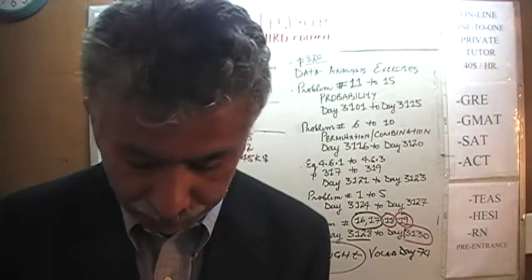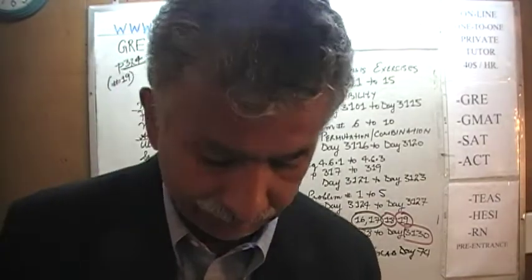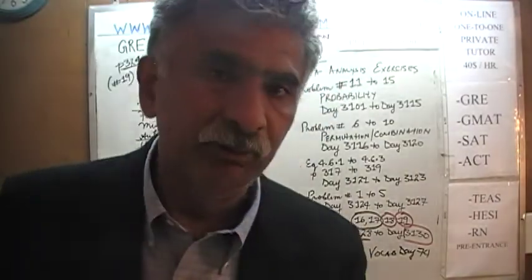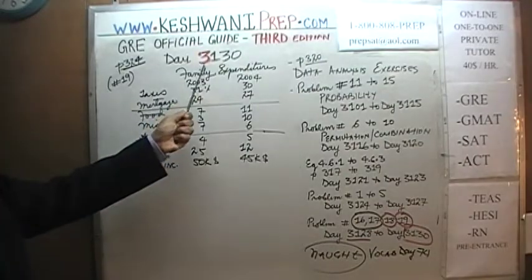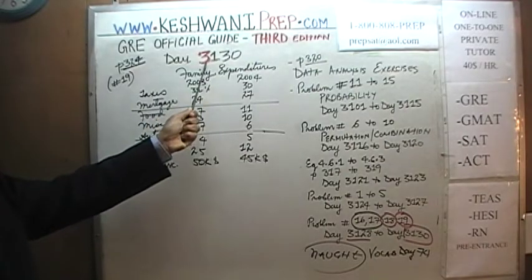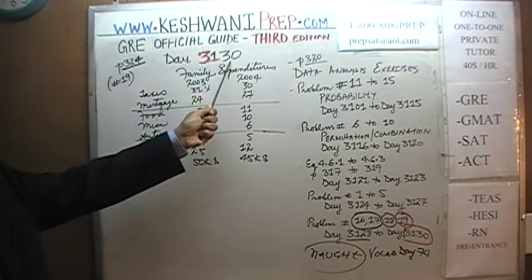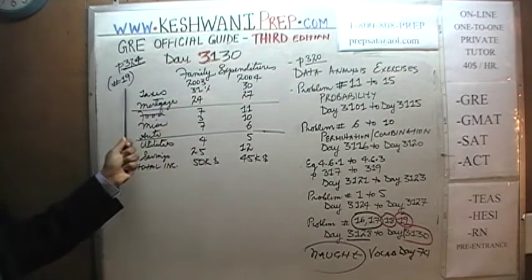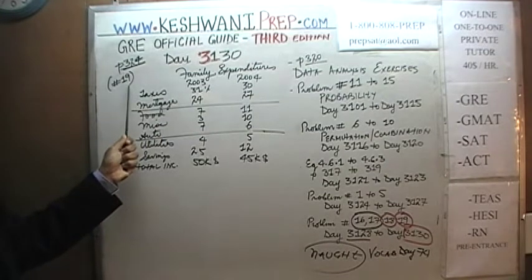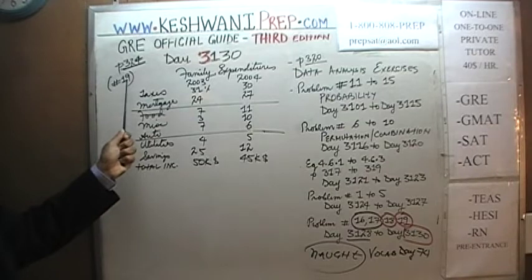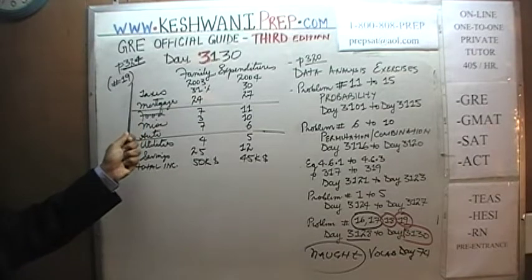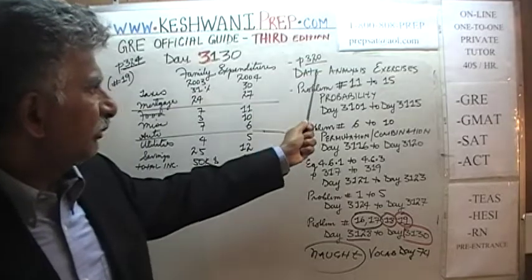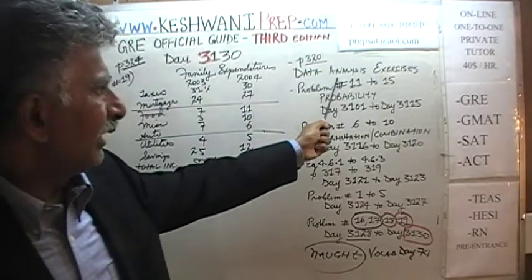Today is our lesson number 130 and most likely the very last one — I will explain in a second. Today is day number 3133; the 3 is to signify that we are in our third edition. Today we will have our 130th video where we will do the very last problem in the math section — problem number 19, on page 324, which is the last problem under the heading of data analysis exercises.